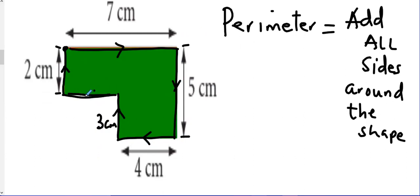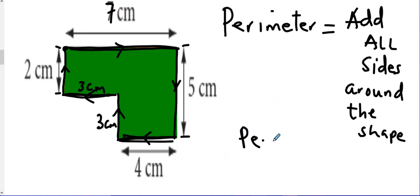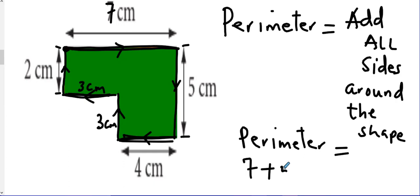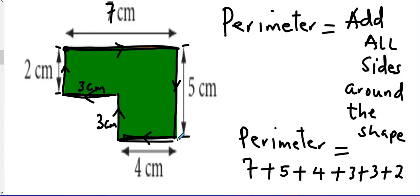This part: all this is 7, but this part is only 4. So 7 minus 4 is 3 — this part is 3 centimeters, meaning 3 plus 4 equals 7. So perimeter equals 7 plus 5 plus 4 plus 3 plus 3 plus 2.